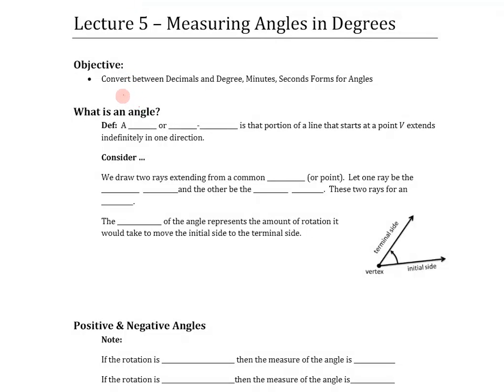In lecture five, we're going to be talking about angles and how we measure those angles. We're going to start by talking about the measurement called degrees, and in this section we're going to want to be able to convert between decimal form of our degree measurements and degrees, minutes, and seconds for angles.